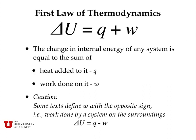The first law of thermodynamics is really simple. It says delta U is equal to Q plus W, meaning the change in internal energy of a system equals the heat added to the system plus the work done on the system. You have to be careful because some textbooks — particularly engineering textbooks — define W with the opposite sign, presenting the first law as delta U equals Q minus W, because they're interested in work done by the system on the surroundings. As chemists, we usually use Q plus W because we're interested in work done on the system from the surroundings.